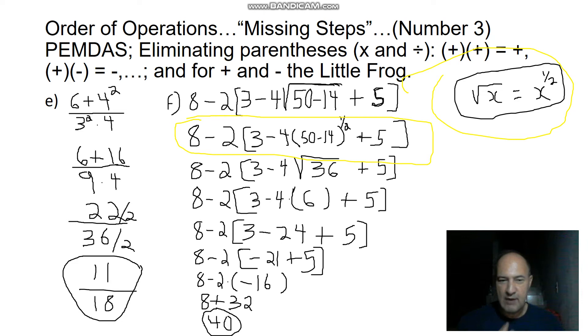8 minus 2 times 3 minus 24, because 4 times 6 is 24, plus 5. Now we have the case inside the bracket where we have two operations solved at the same time. If we have a subtraction and an addition, we work always from left to right. First we do the subtraction. How can we subtract 3 minus 24? Our little frog goes first to the right three times, but then goes back 24 times to the left. The number we get is minus 21.